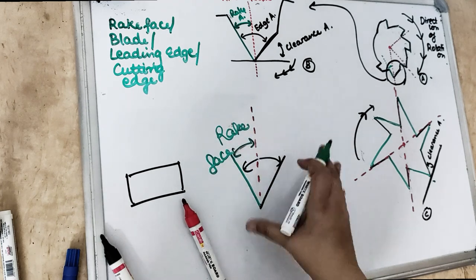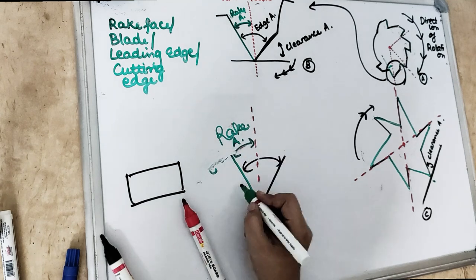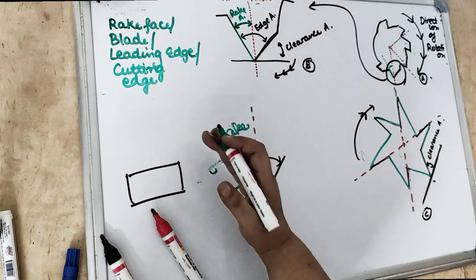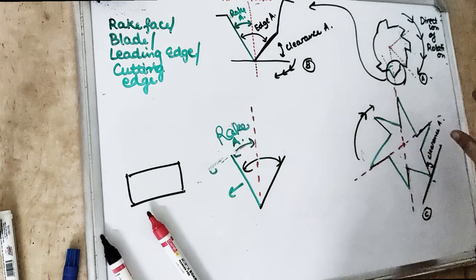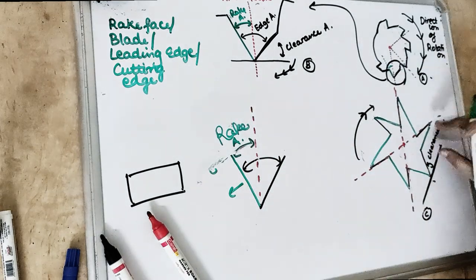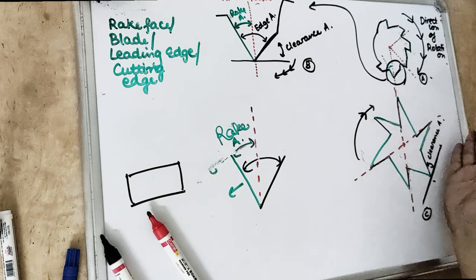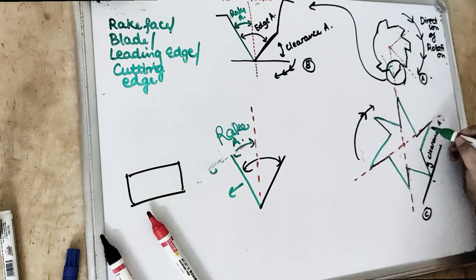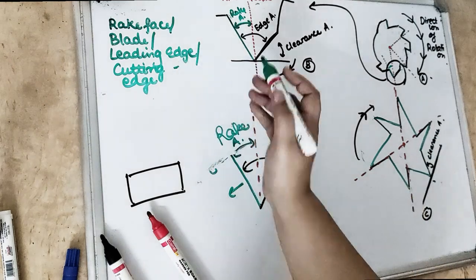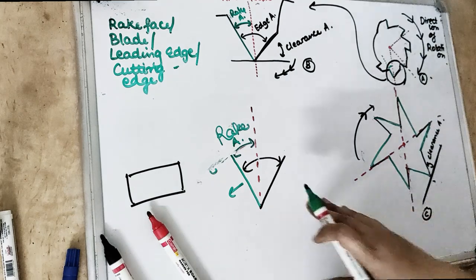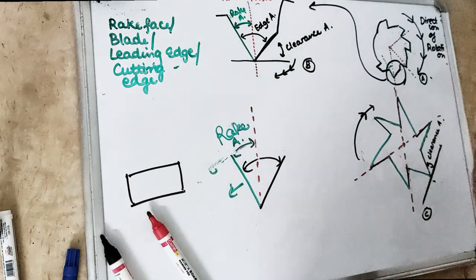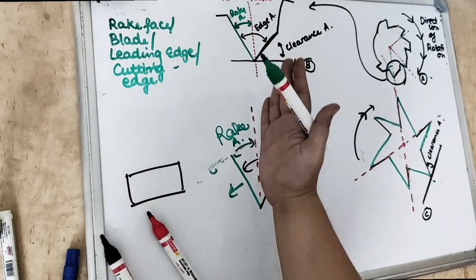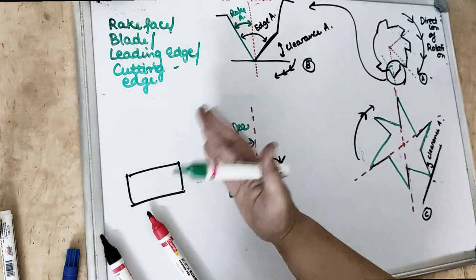The angle from the long axis of the instrument to the cutting edge is the rake angle. This face or side is our rake side, or rake face, or blade, because it is doing all the cutting. It is also the leading edge because it comes first — this surface touches first during rotation. So it is known as the blade, the leading edge, and the rake face. The angle between the long axis and the rake face is known as our rake angle.